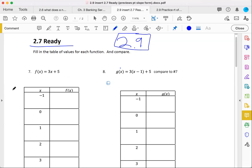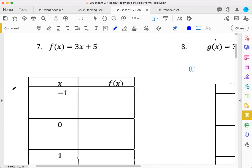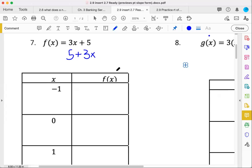What's happening here? We're filling in the table of values for each function and we're comparing. We have 3x plus 5, or you could also think of it as starting with 5, we add 3x times.